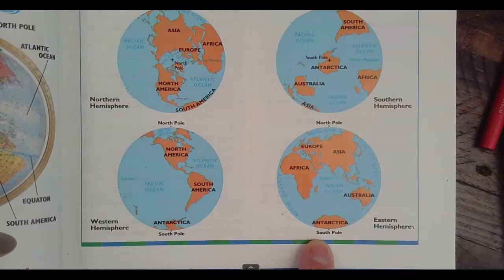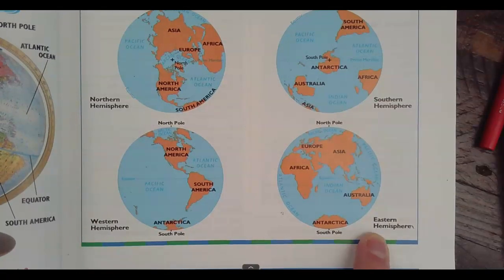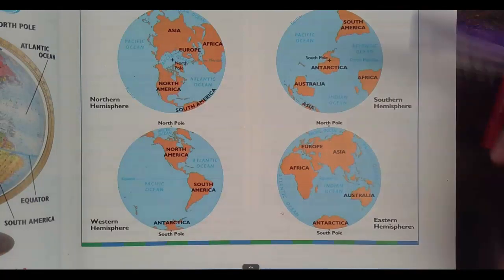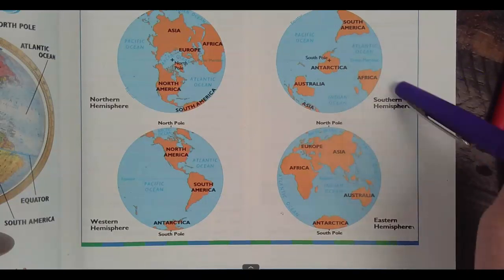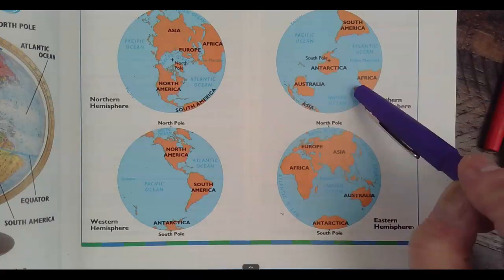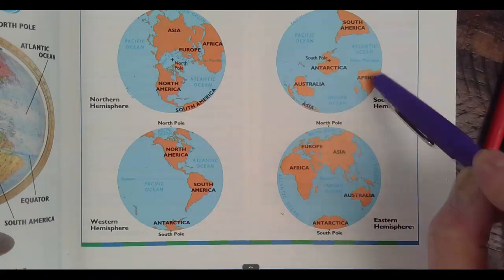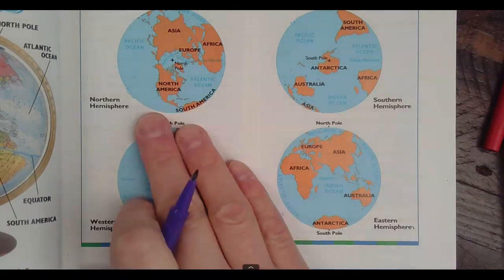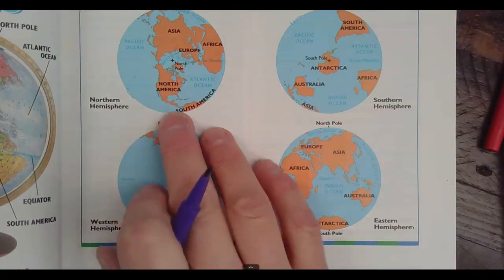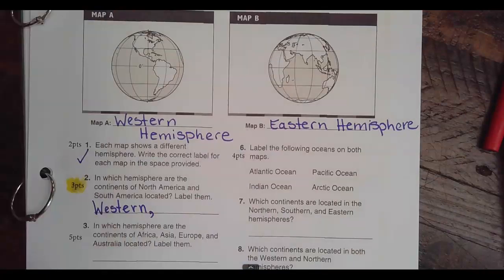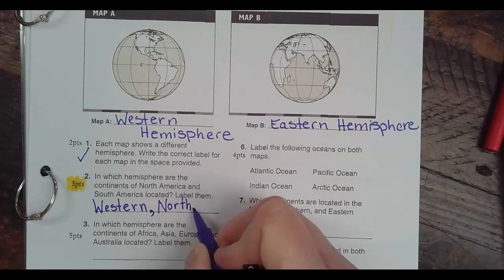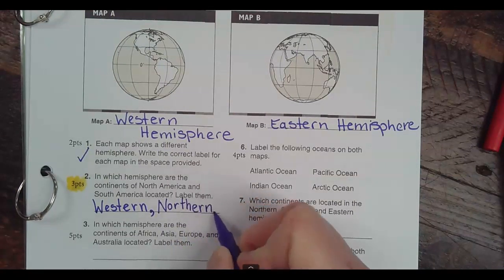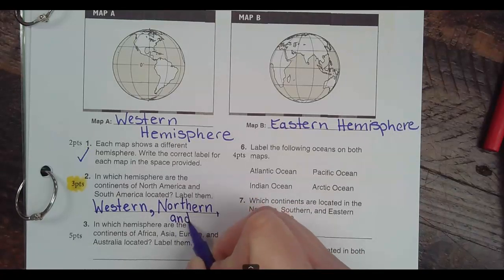Can we see North America or South America in the Eastern Hemisphere? No. Can we see North America or South America in the Southern Hemisphere? Yes, we can see it in the Southern Hemisphere. And North America is also in the Northern Hemisphere. So the answer is Western, Northern, and Southern.